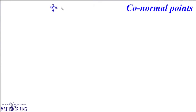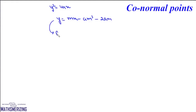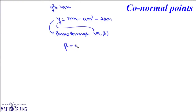So now we know that for this parabola, which is y² = 4ax, the equation of normal is y = mx - am³ - 2am. Now suppose we need to find the equation of a normal which passes through a point, say (α, β). So that means this normal will pass through this point, so we can write this as β = mα - am³ - 2am.